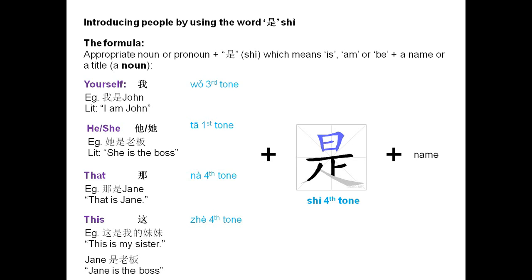You should note that you can use the word 是 to show the relationship between any two nouns or pronouns. Let's have a look at an example conversation.